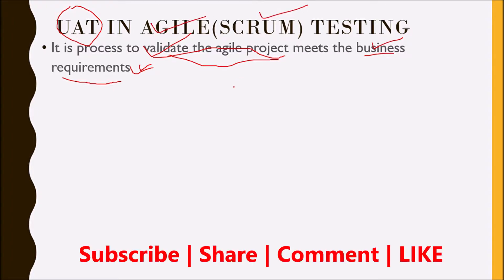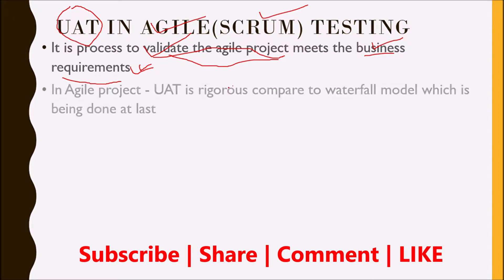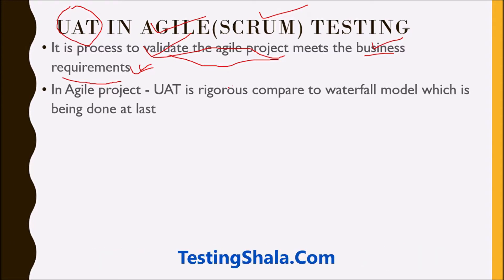Let's understand the difference between UAT in the waterfall model and UAT in the Agile model. Normally in the waterfall model, we do user acceptance testing once the system testing is done — that is very late in the game. If some issue is found by the end user or the client, then adopting those changes in the development phase is not very easy.